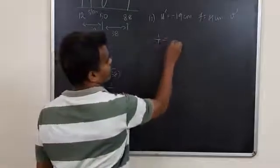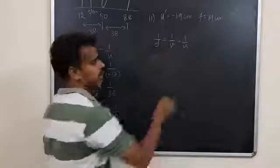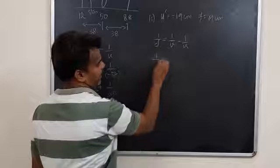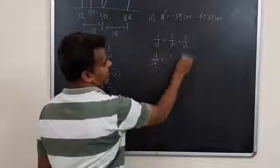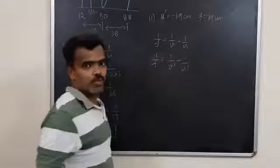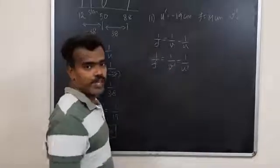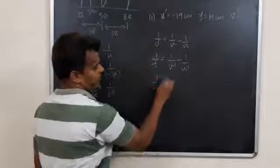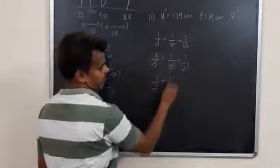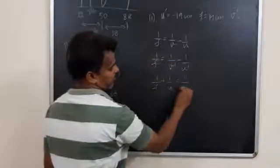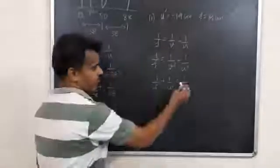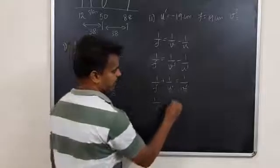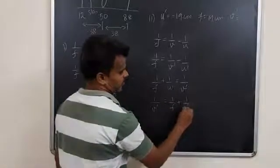The same lens formula, 1 by F equals 1 by V minus 1 by U. We need to find V dash. Therefore, this will come to the left side. 1 by F plus 1 by U equals 1 by V. For our writing purpose, 1 by V dash equals 1 by F plus 1 by U dash.